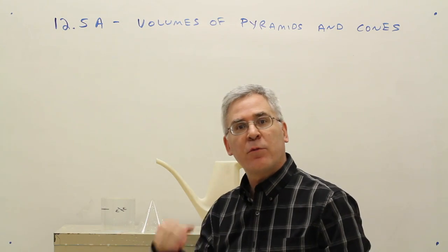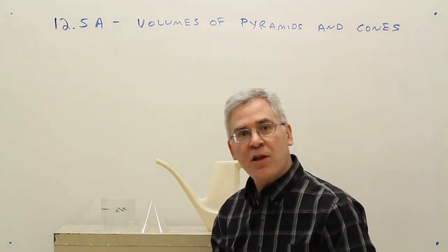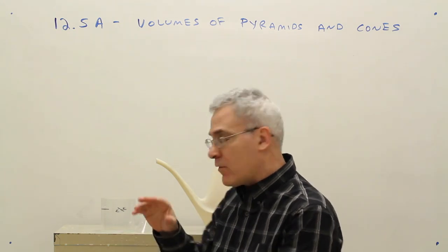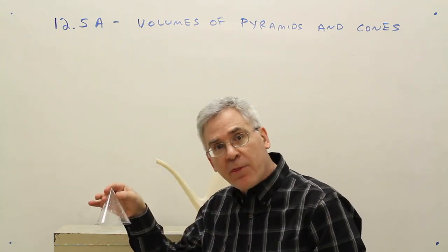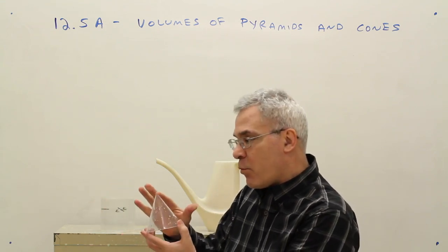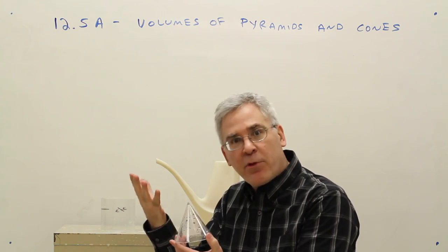So the cone's volume will be one-third of that of the associated cylinder. The cylinder's volume was the area of the base times the height. So the cone will be one-third the area of the base times the height. The way I remember it, for the pointy solids, there's that one-third factor.